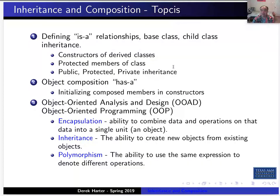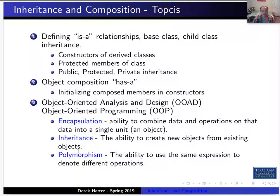Inheritance is a relationship where you're creating base classes and then deriving child classes from those base classes. Each child class or derived class is a type of the base class. We'll talk about constructors from derived classes, protected versus private inheritance, and overriding member functions in derived classes. Then we'll talk about composition, which is the has-a relationship, and at the end I'll have a word or two about object-oriented analysis and design, also known as object-oriented programming. We'll summarize about encapsulation, inheritance, and polymorphism.